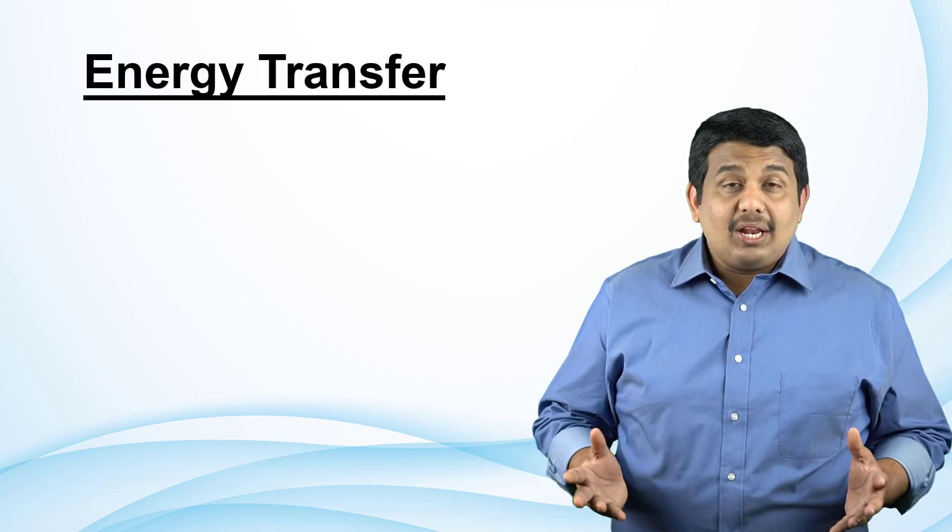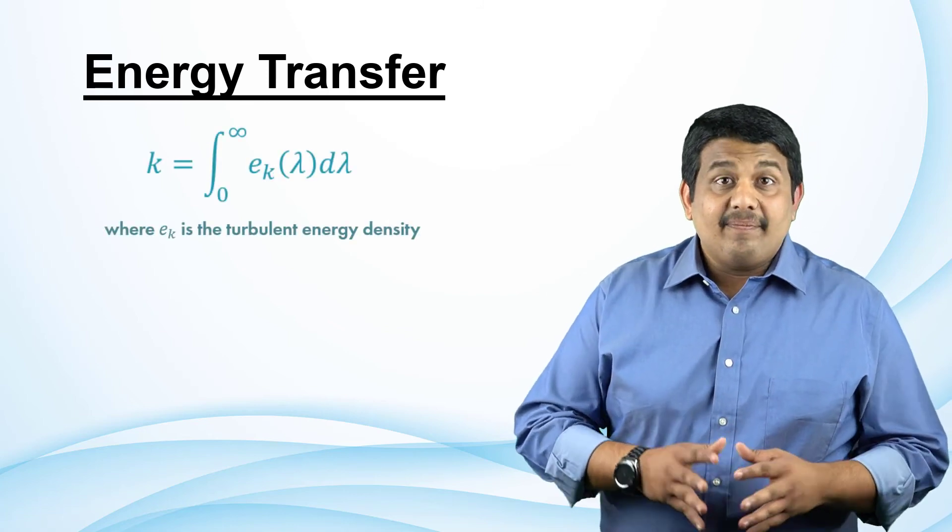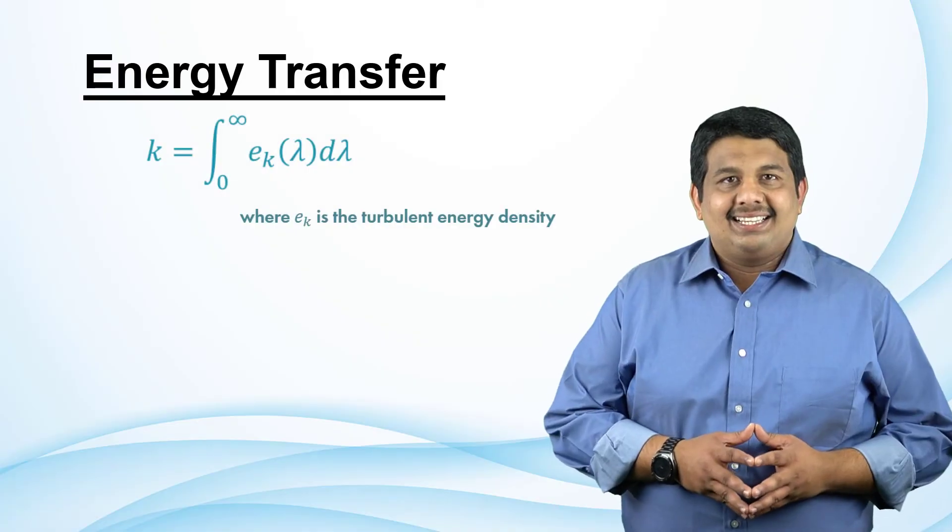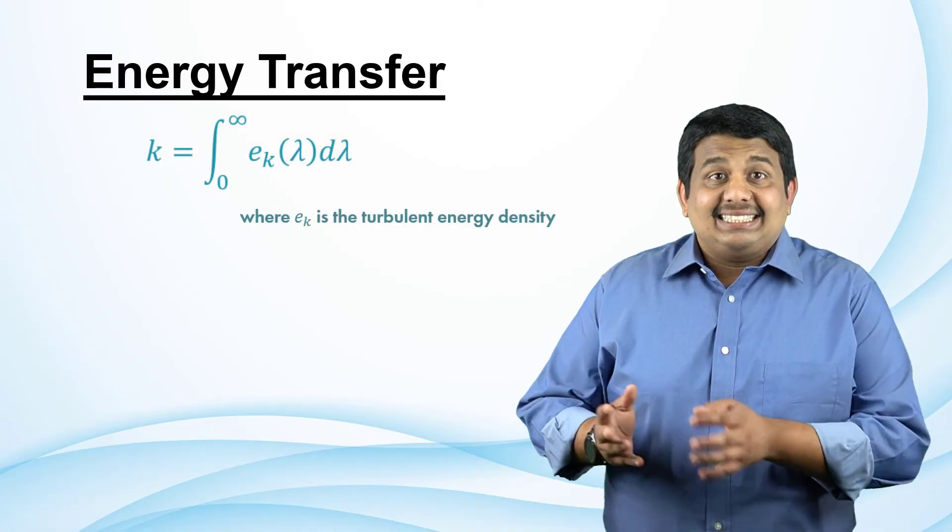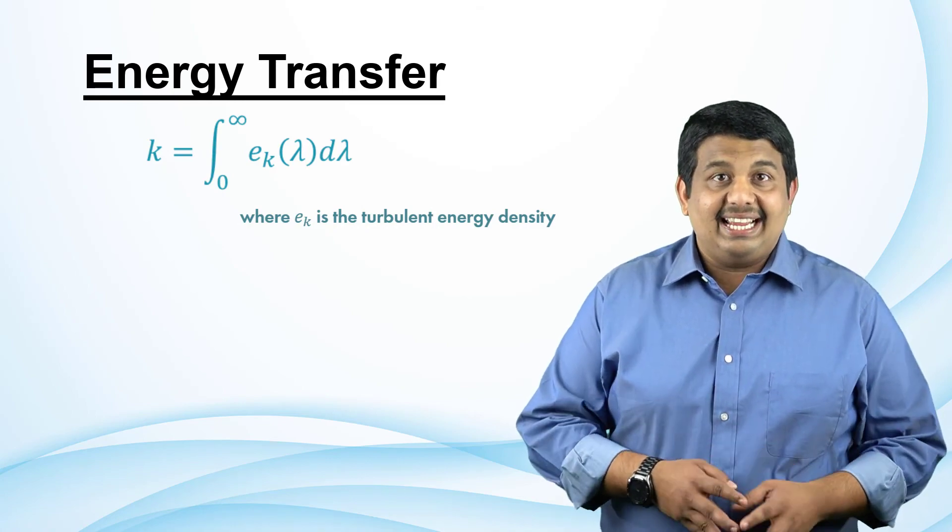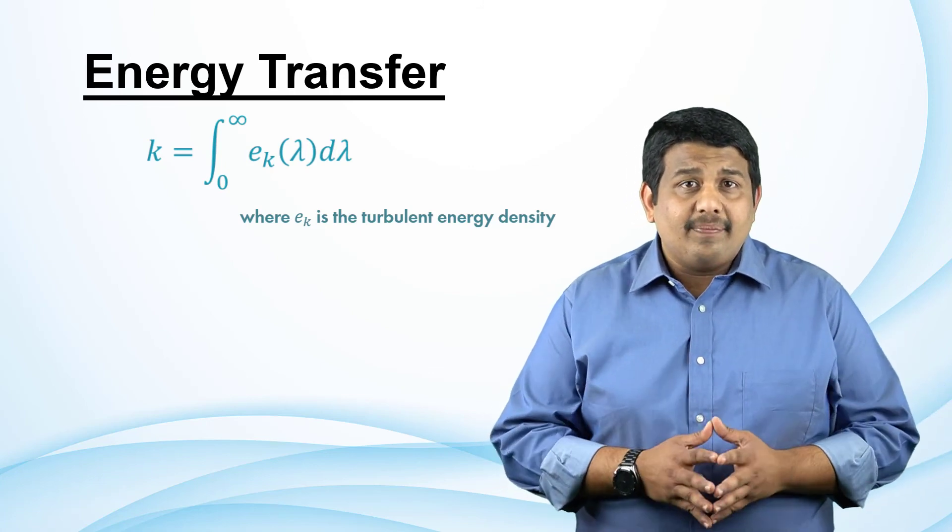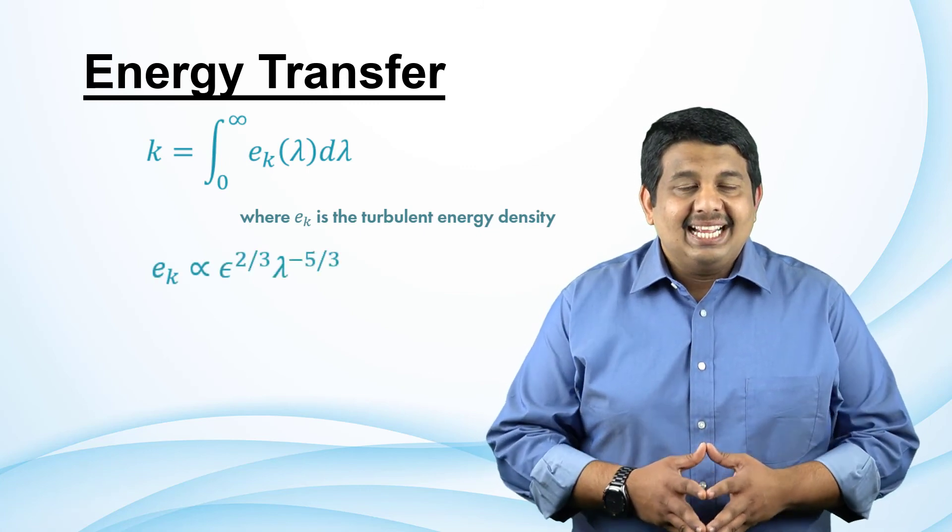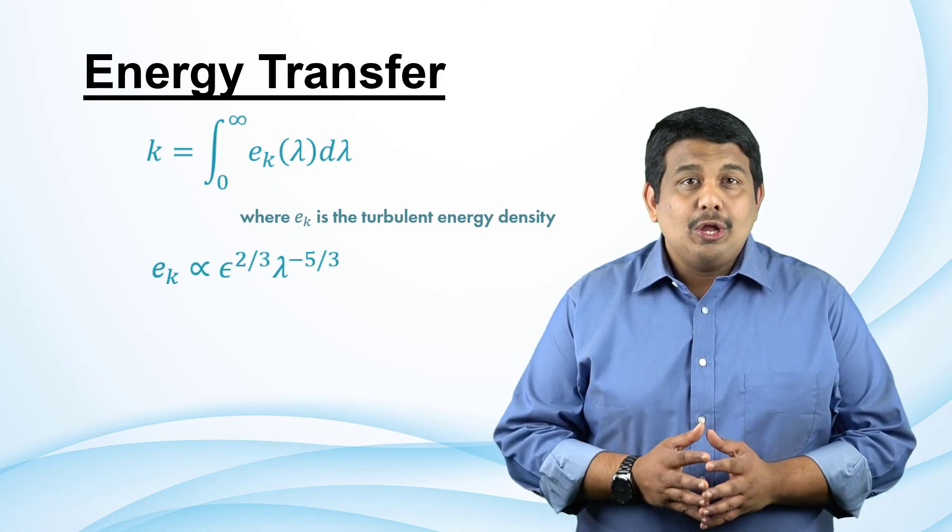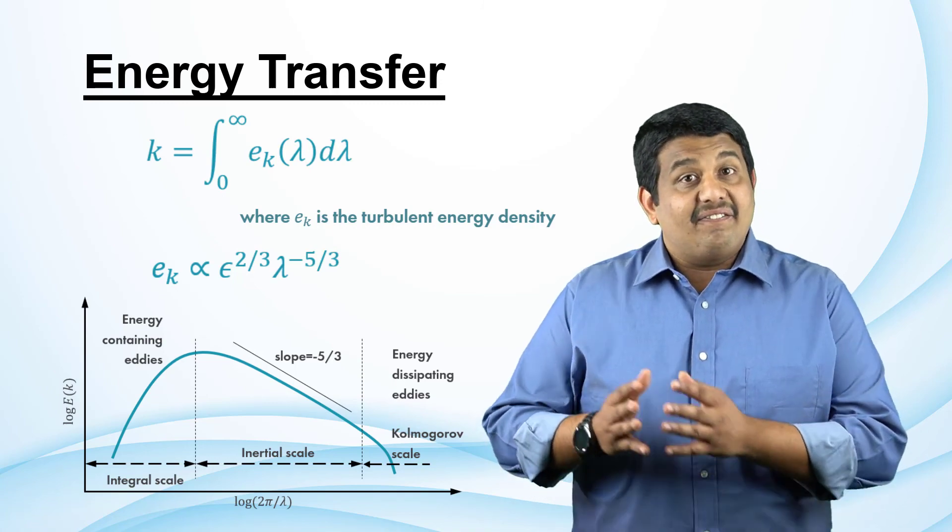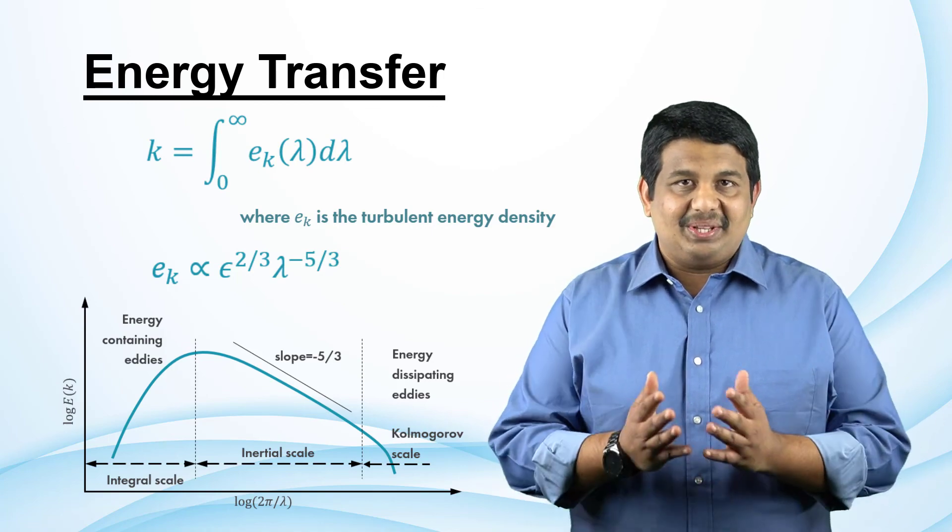Till now, we spoke a lot about the energy transfer. Let us now formalize the idea using mathematical relations. The turbulent kinetic energy for a range of structures with a varied wavelength can be written as shown here. Since the energy transfer in the inertial range is dependent only on the rate of dissipation, using dimensional analysis, we can obtain a relation for the energy density as shown here. This is the famous fifth-third law proposed by Kolmogorov that is used to determine the energy contained in the eddies of a certain length within the inertial range. That brings us to the end of this lesson.